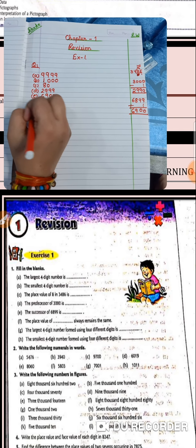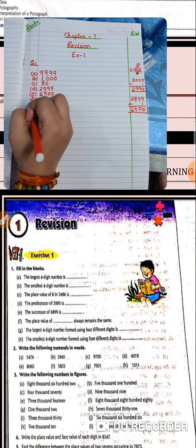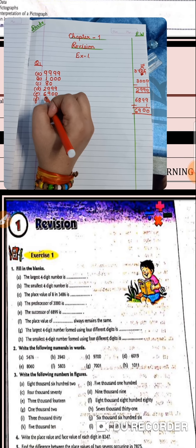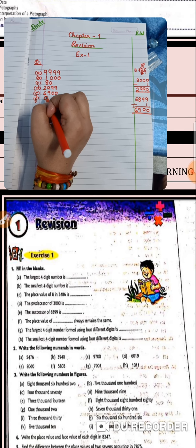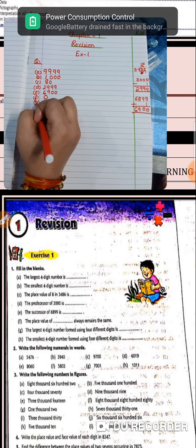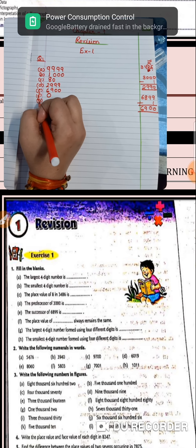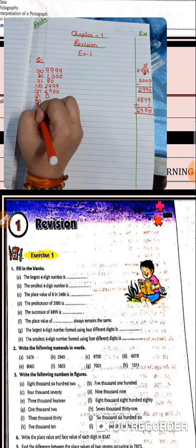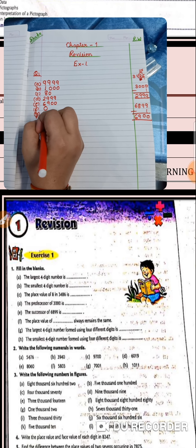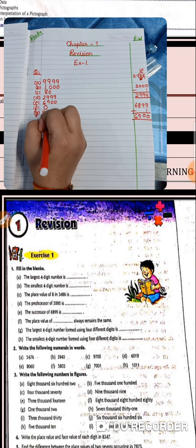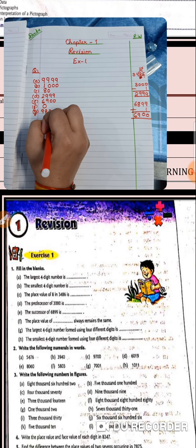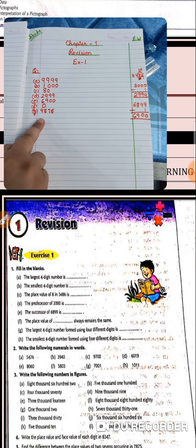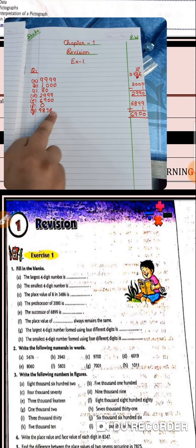Part F: the place value of blank always remains the same. The place value of 0 always remains the same. Part G: the largest 4-digit number formed using 4 different digits is blank. The largest number is 9, then 8, then 7, and then 6 — so the largest 4-digit number formed using 4 different digits is 9876.